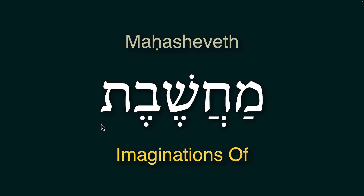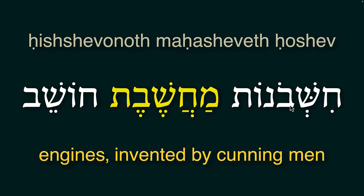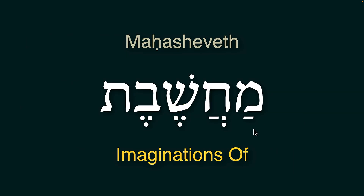The next word we're looking at is Makhshavet. The -et ending is a construct form, meaning 'of' is to be added at the end. It is a noun meaning 'imaginations of,' 'inventions of,' 'schemes of,' 'contraptions of,' etc. So this is another alternative word from the same root. Khashav means to invent, to count — from that verb they built a noun using the prefix mem: Makhshavet means 'imaginations of' or 'inventions of.'